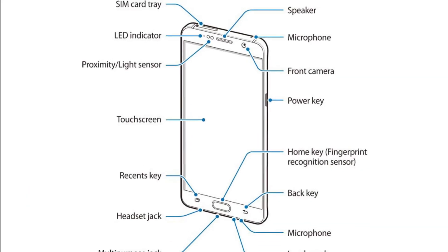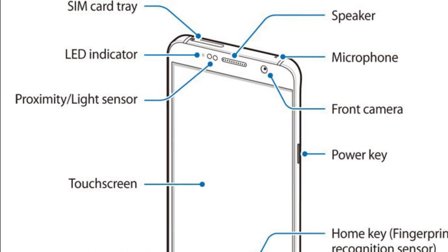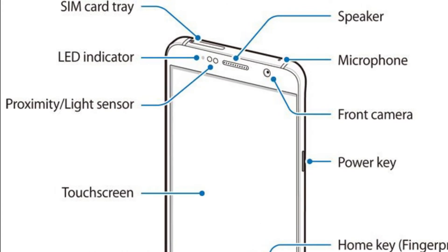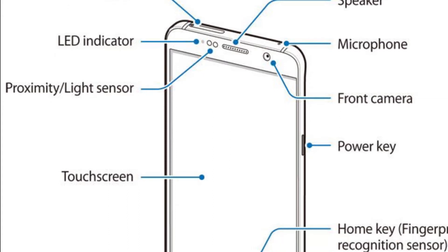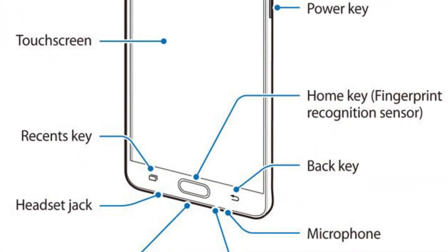Let's look at the front view. In the front we have an LED indicator, a proximity or light sensor, a speaker, and a front camera. Below these we have the touchscreen, and below the touchscreen we have a recents key, a home key with the fingerprint sensor, and a back key.